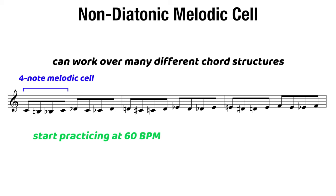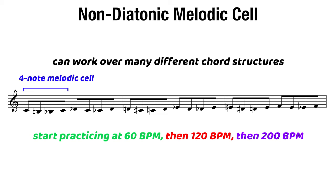I like to do the 60, 120, 200 kind of goal set, where I start really nice and slow at 60. Once I feel comfortable doing a couple reps at that tempo, I move up to 120, and then I move up to 200 from there.